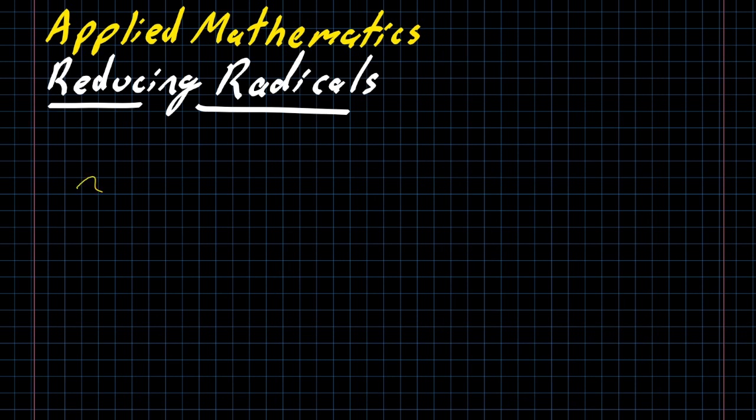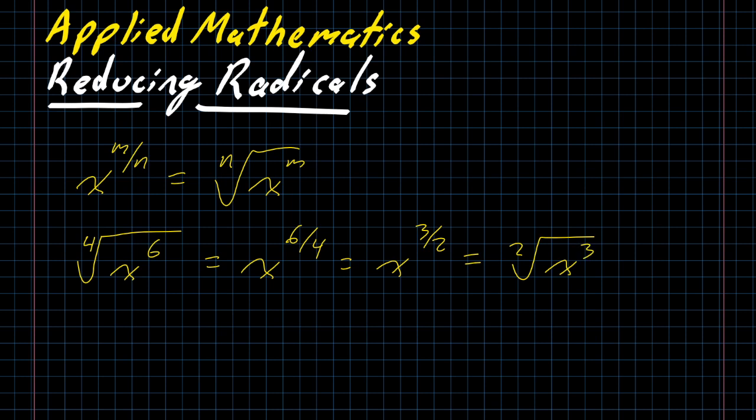Remember, x to the m over n power is the same thing as the nth root of x to the m. For example, if I have the fourth root of x to the sixth power, that's the same thing as x to the 6 over 4 power, and 6 over 4 reduces to 3 over 2. Using that property of fractional exponents, this is the square root of x to the third power.